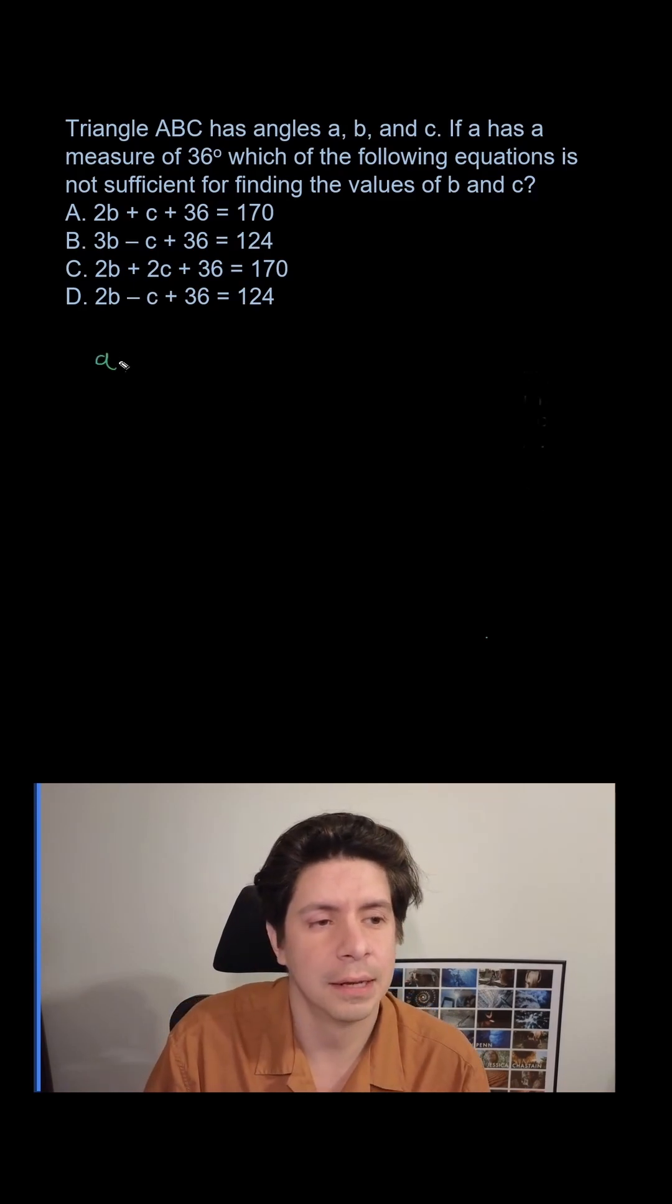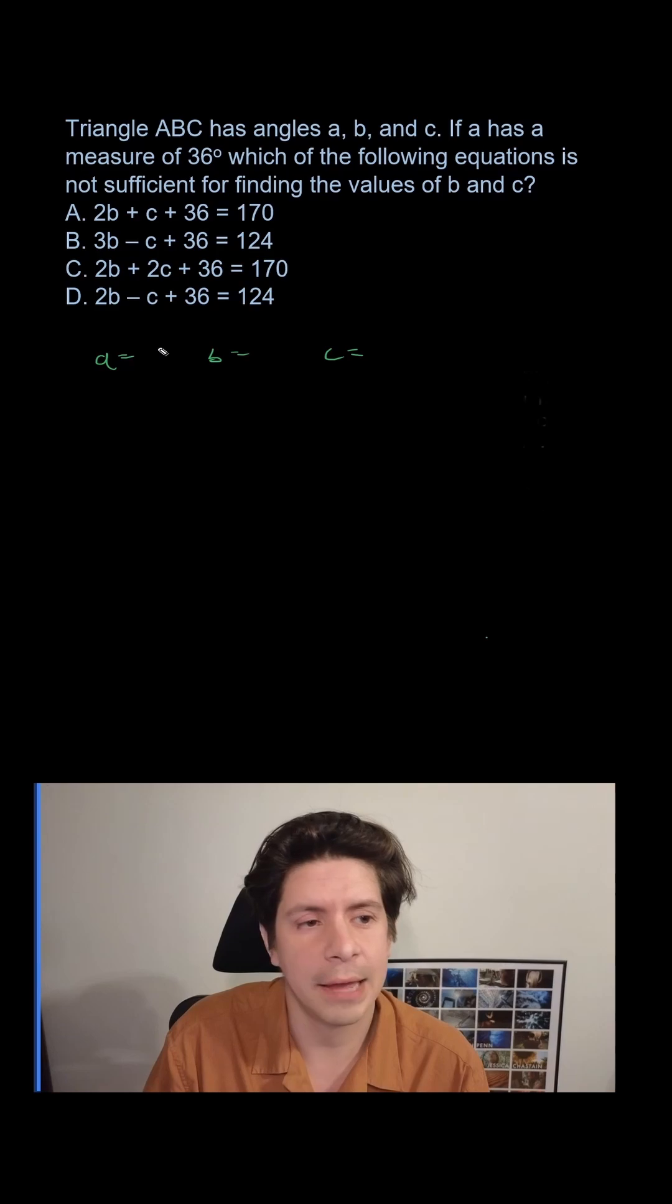So we have A equals, we have B equals, and we have C equals. A we know is 36. Now they're in a triangle, so together we can get one equation of 36 plus B plus C equals 180.